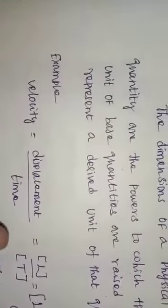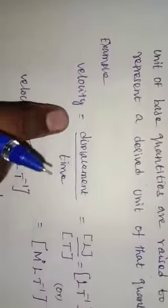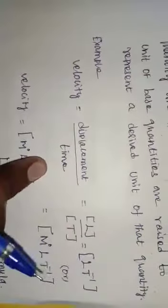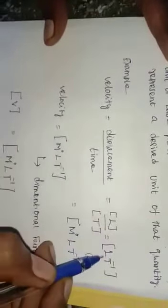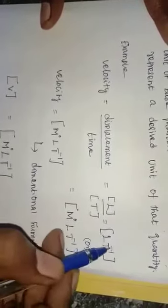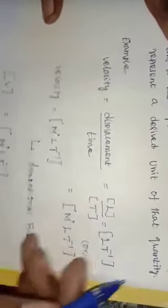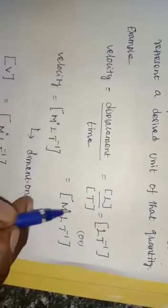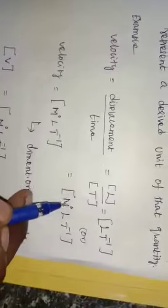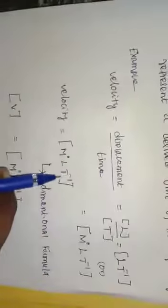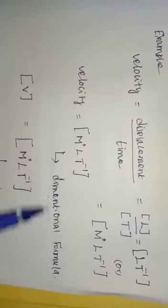To find the dimension of velocity, you should first know the formula. Velocity equals displacement divided by time. The dimension of displacement is L and the dimension of time is T. Moving T to the numerator changes the sign of its power, giving L T⁻¹. Since mass is not present, we write M⁰. So the dimensional formula of velocity is M⁰L¹T⁻¹.